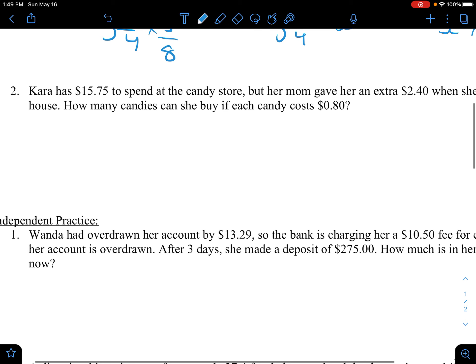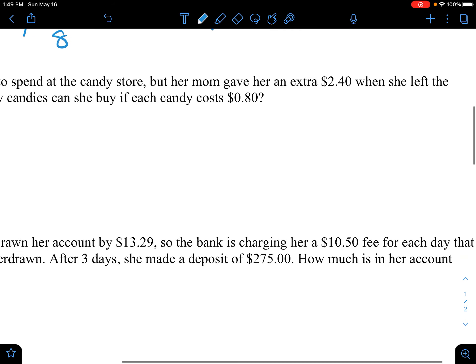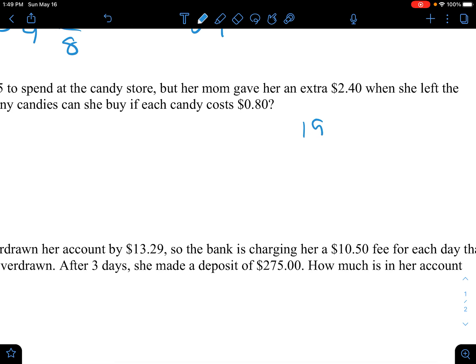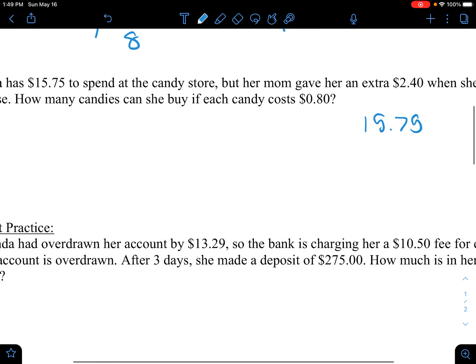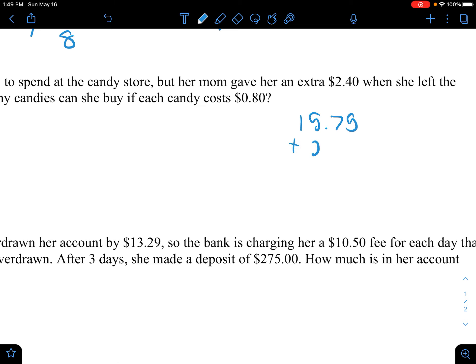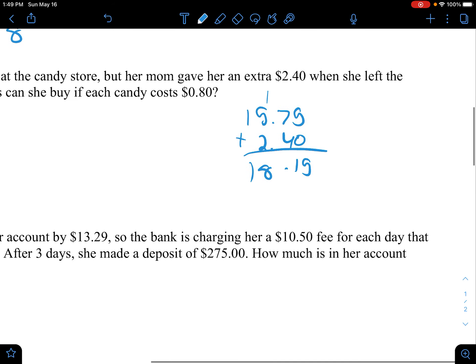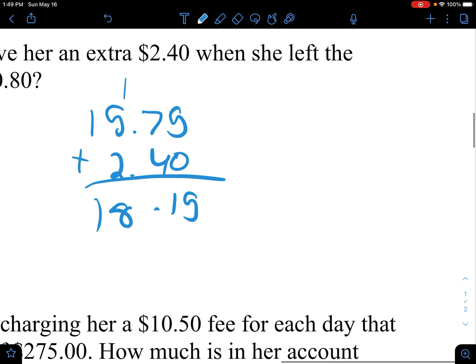So, Kara has $15.75 to spend at the candy store. Her mom gave her an extra $2.40. Let's find out how much she has first. So, she has $18.15. How many candies can she buy if each candy costs $0.80?